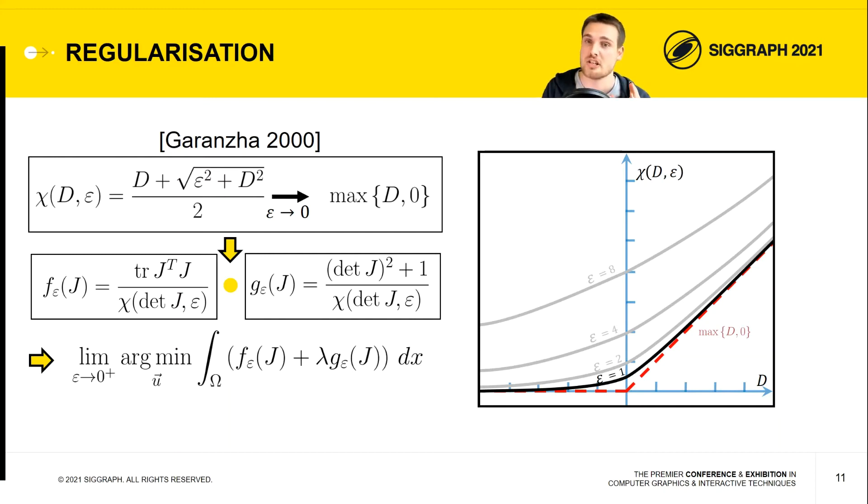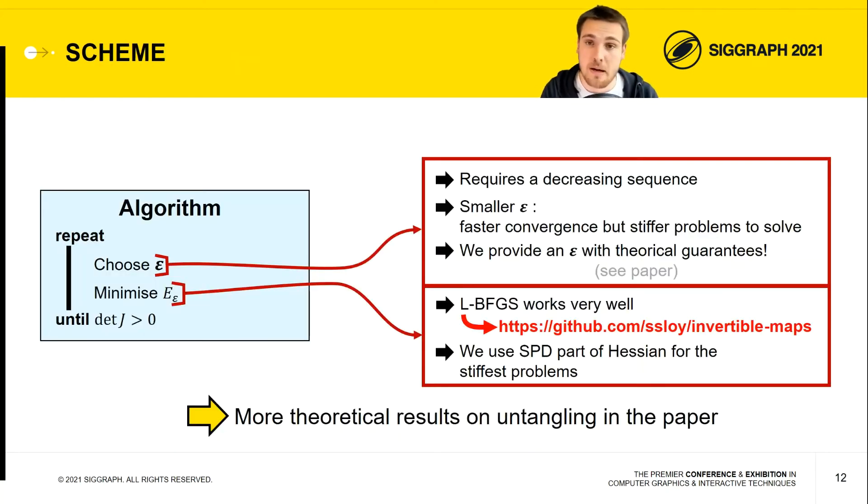So we build a new energy E epsilon that is going to converge to the energy E when epsilon converges to zero. To build a valid mapping, the process is very straightforward. We construct a sequence of epsilon which is decreasing and slowly optimize the energy until we obtain a valid mapping.